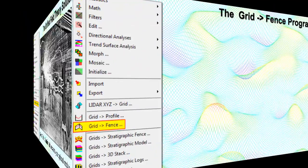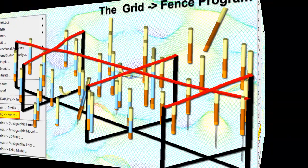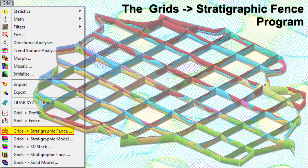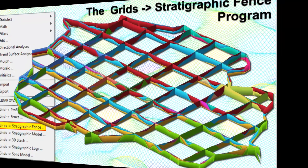The Grid to Fence program plots three-dimensional profiles depicting profiles based on an existing grid model — i.e., the intersection between the ground surface and the fence panel. The Grid to Stratigraphic Fence program creates a fence diagram based on a list of existing grid models that represent the top or superface and base or subface of each unit.